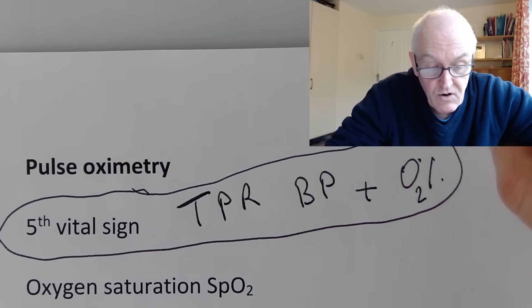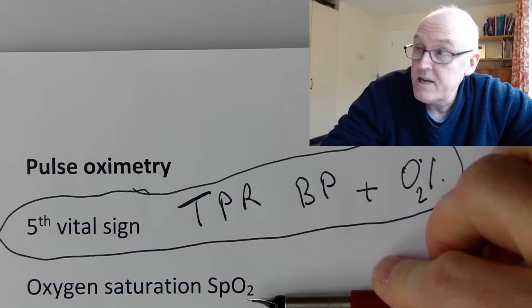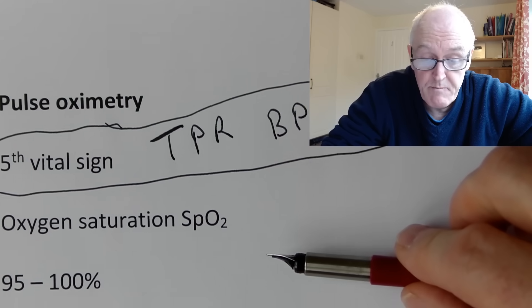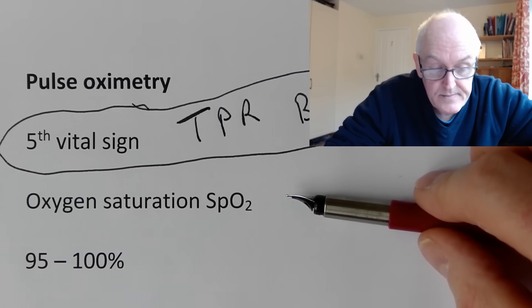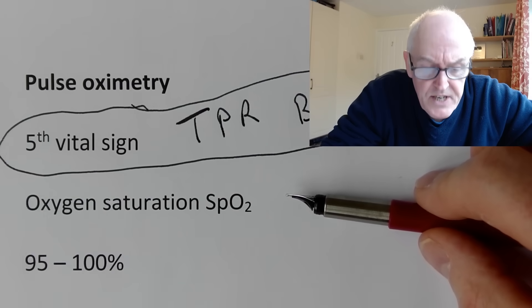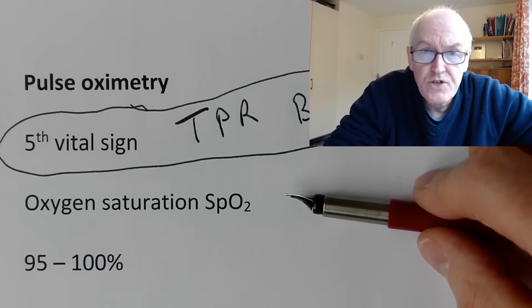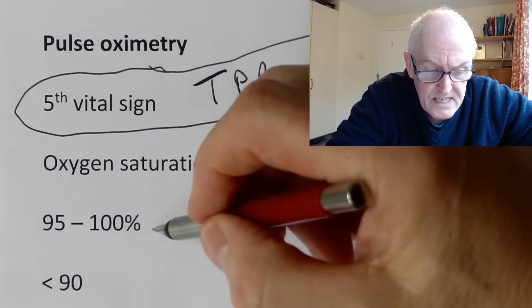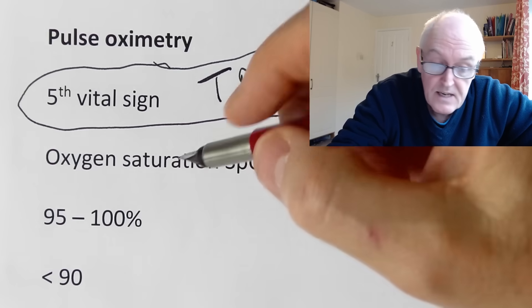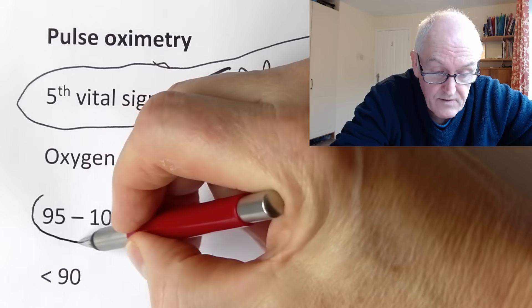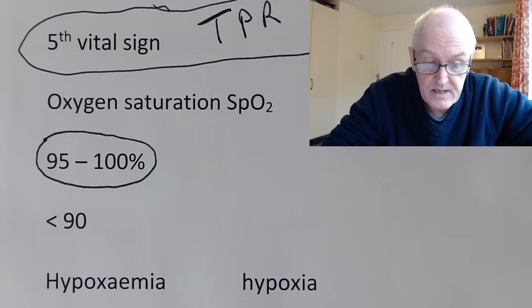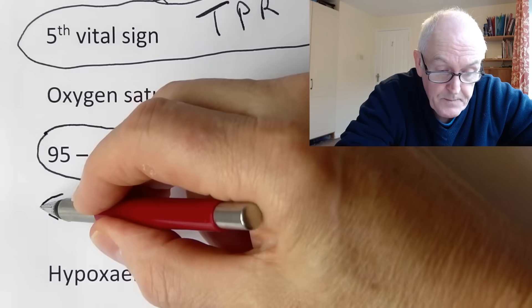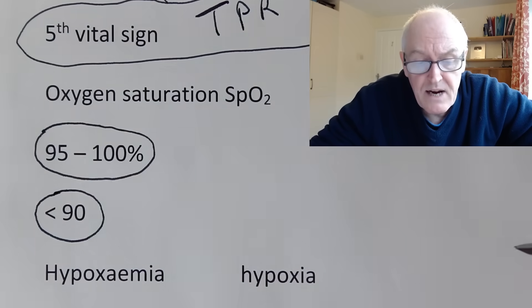This is measuring oxygen saturations, SpO2, the oxygen saturations in the periphery. The fingers are a periphery of course. The normal range I tend to find, having done this on hundreds of young fit students, is 95 to 100%. In the clinical situation we might get concerned if they drop below 90, depending very much on the patient background.